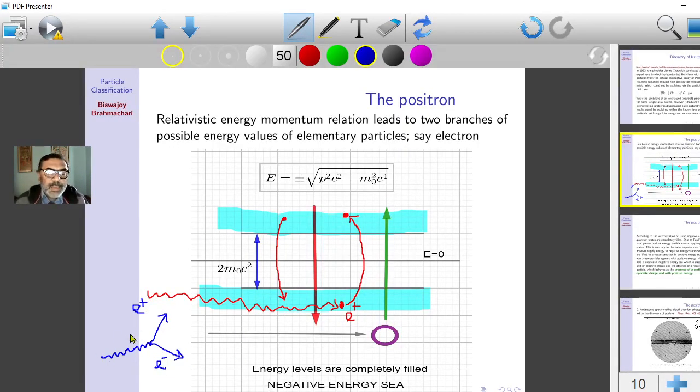And also, charge is balanced because photon has zero charge. Electron has negative charge whereas positron has positive charge. So charge is balanced.